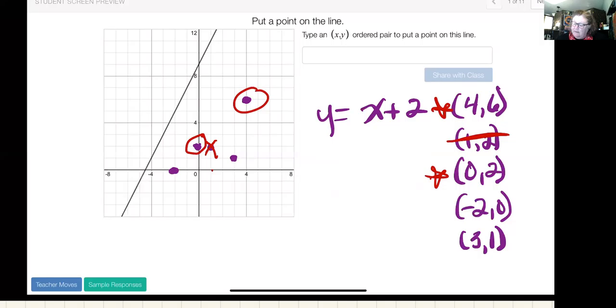Negative two and zero, so we would get negative two and zero for my x and my y plus two. Negative two plus two is zero. Zero, that one checks. So that's a good point as well.